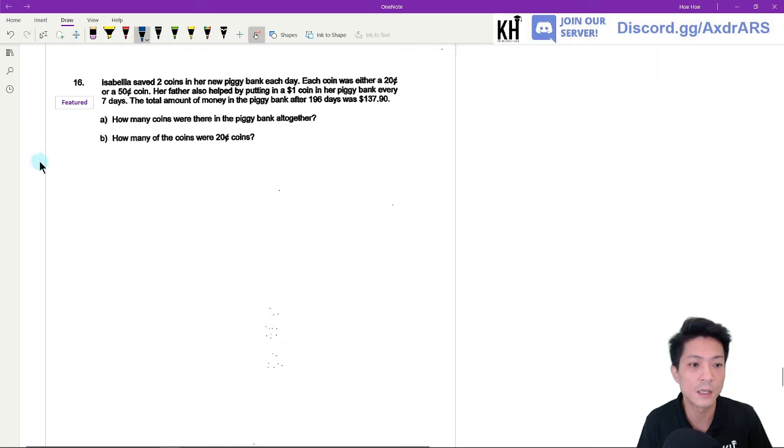Okay, let's do part A first. We're gonna find out how many coins the father put in. So the father put in a one dollar coin every seven days, right? So we're gonna use 196 divided by seven.